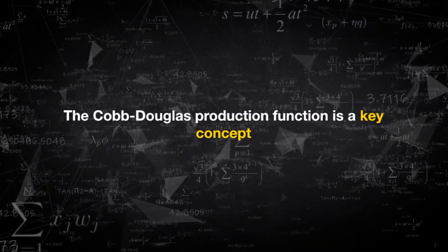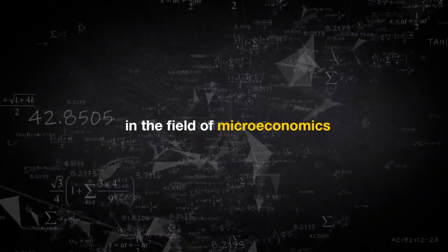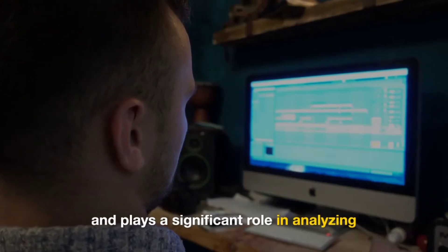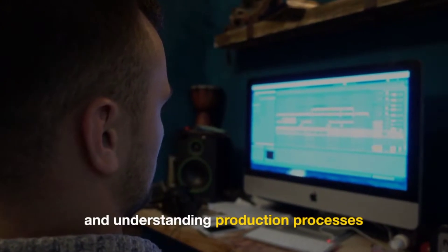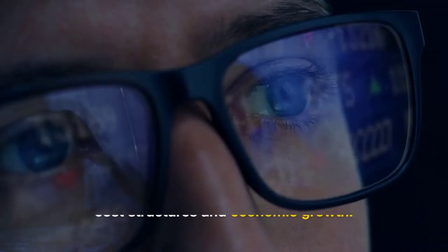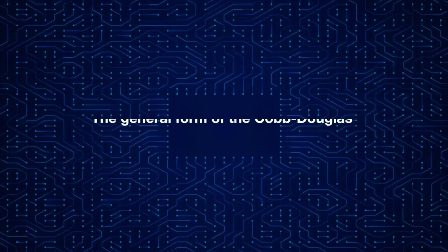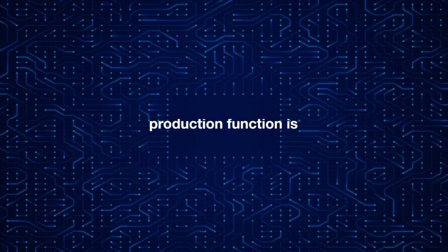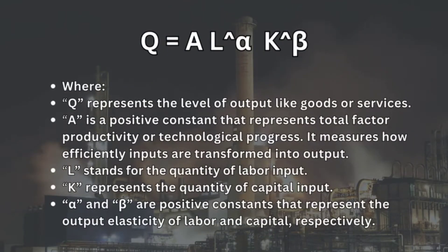The Cobb-Douglas production function is a key concept in microeconomics and plays a significant role in analyzing and understanding production processes, cost structures, and economic growth. The general form of the function is Q equals A, L alpha, K beta.